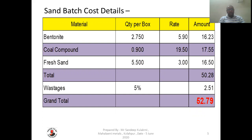Now we calculate sand batch cost. Bentonite quantity per box will be 2.75 kg into rate 5.9, amount is 16.23 rupees. Coal compound 0.9 kg into 19.50 rupees equals 17.55 rupees. Fresh sand 5.5 kg into 3 rupees that is 16 rupees 50 paisa. Total comes around 50 rupees 28 paisa.